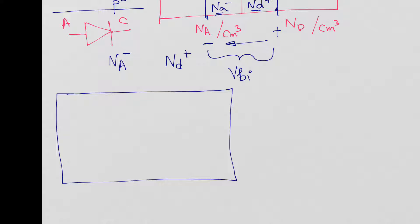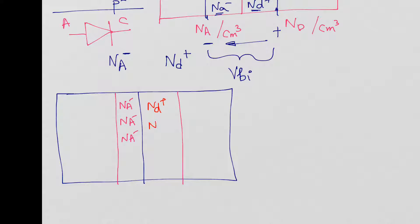Let me draw the depletion region again. There is a region on both sides where the charges got exposed: NA minus, NA minus, NA minus on the P side, and ND plus, ND plus on the N side. I drew the depletion widths different lengths on both sides — WP on the P side and WN on the N side. The region is called the depletion region because there are no carriers — no electrons or holes — within it. This is the junction.